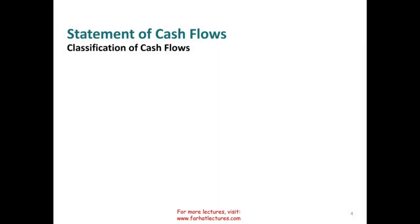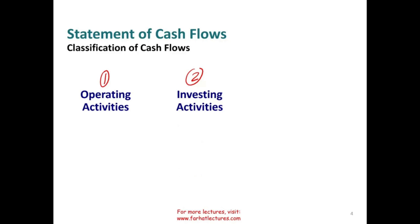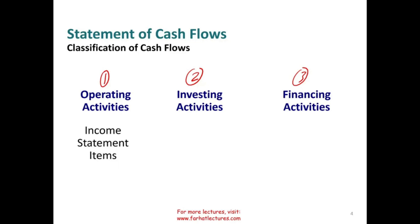Now let's take a look at the classification of the cash flow statement. The three components are: one, operating activities; two, investing activities; three, financing activities. Now we need to understand the big picture for every component. Operating activity covers the income statement items — revenues minus expenses equal to hopefully net income.